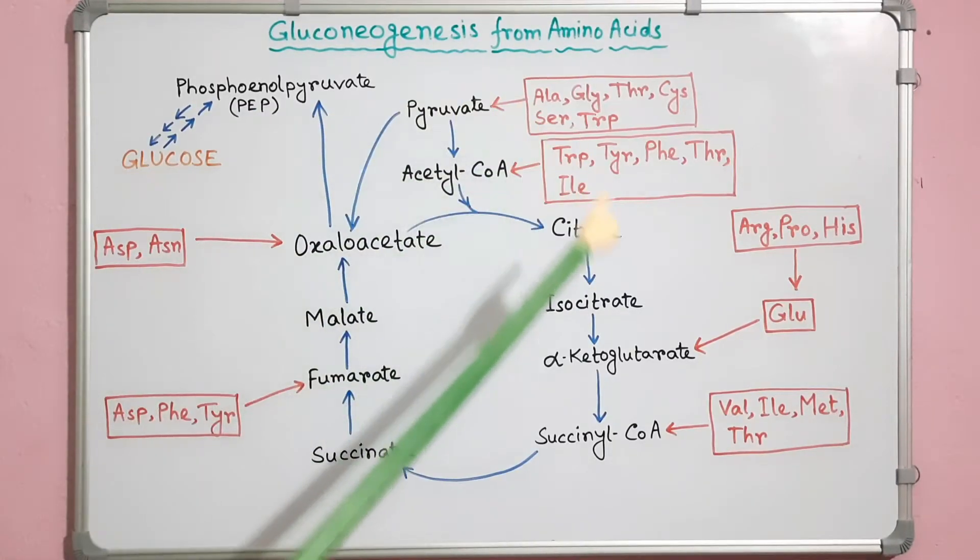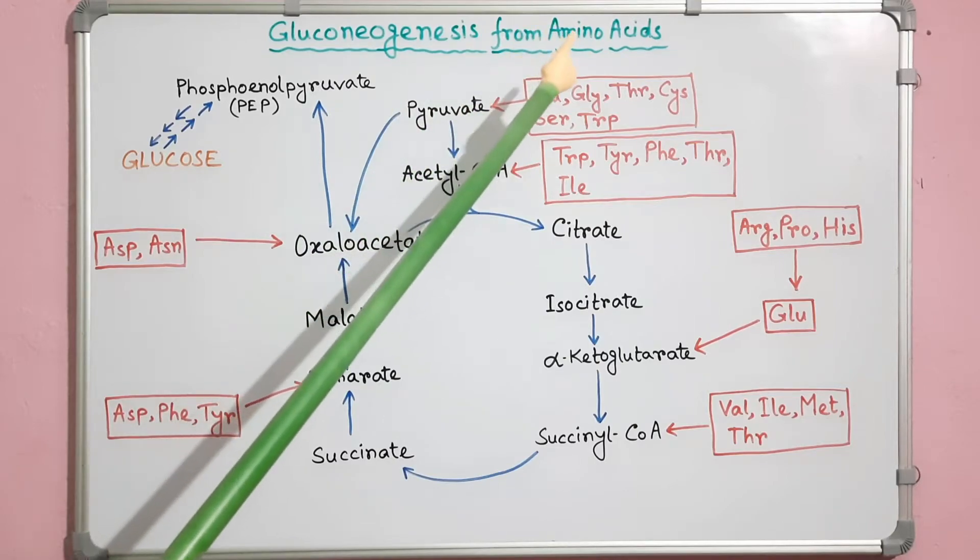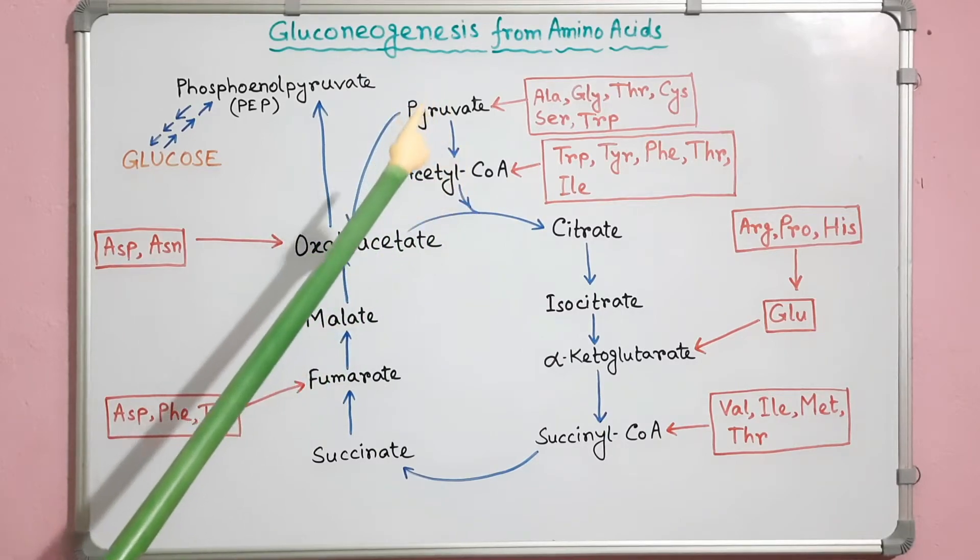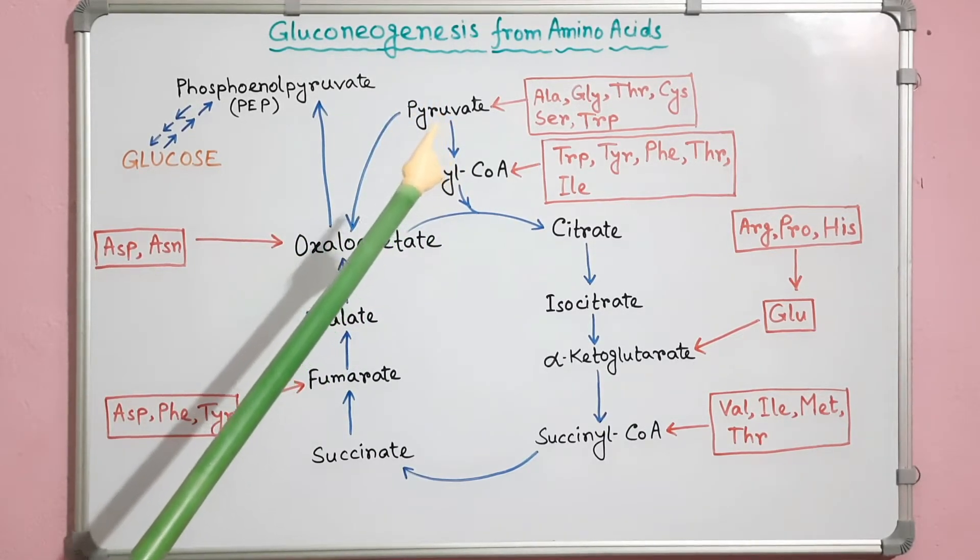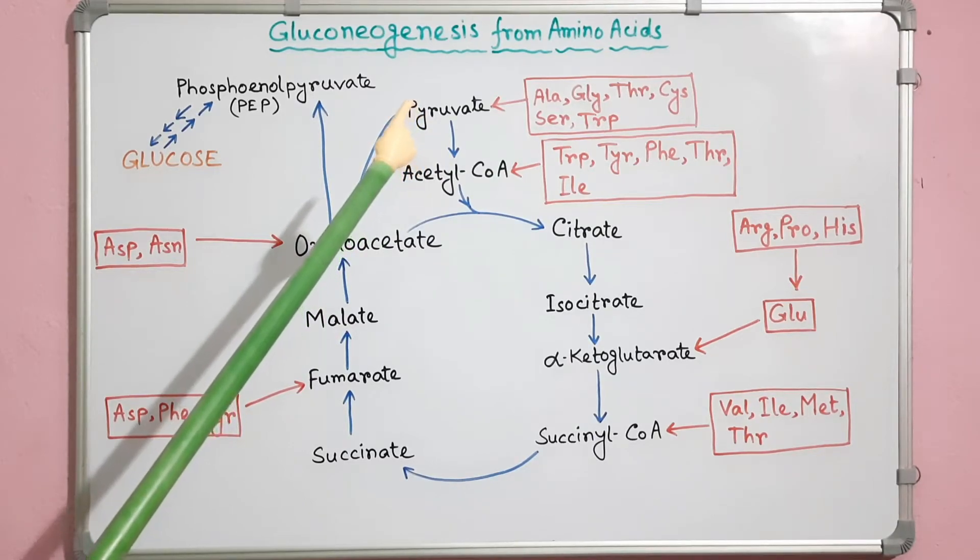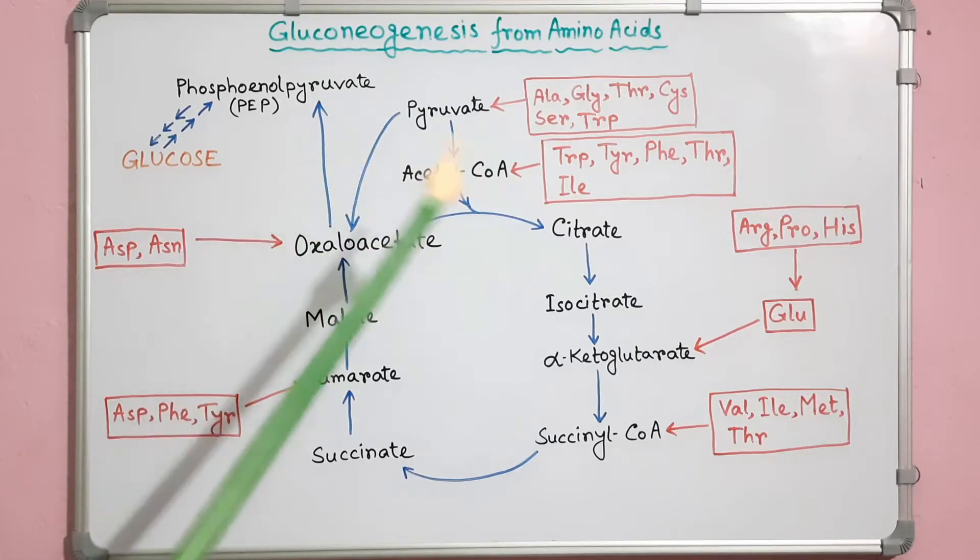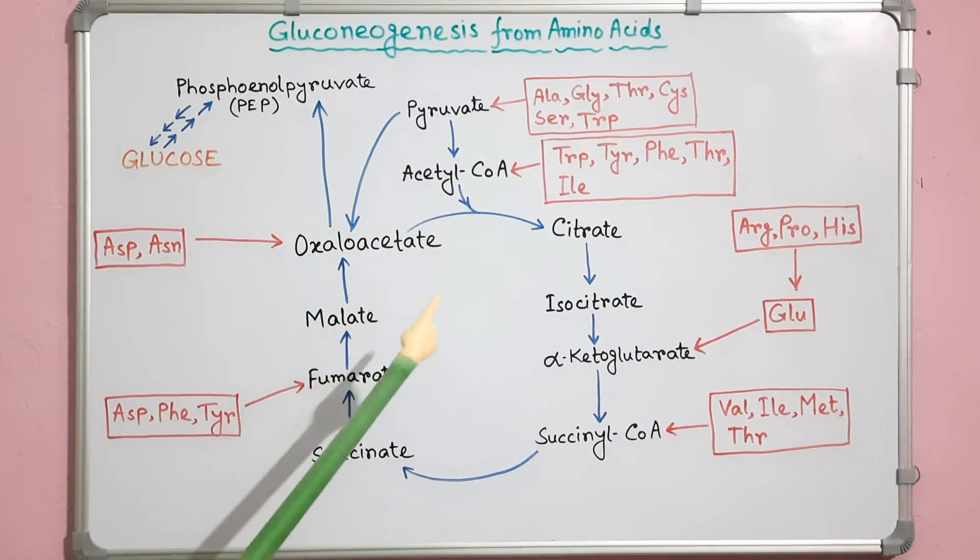In this diagram I have shown gluconeogenesis from amino acids. Except leucine and lysine, most amino acids by losing their amino groups can form gluconeogenic intermediates. This mechanism predominates during catabolism, fasting, and starvation.